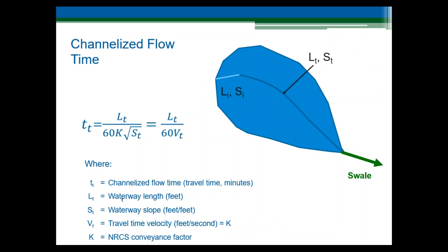The next component of the time of concentration is the channelized flow time. Flow does not have to be in an engineered channel — channelized flow time also includes conveyance of concentrated flow in rills, gullies, gutters, or other site features where the depth of runoff increases beyond the sheet flow depth. Channelized flow time is equal to the distance traveled divided by the average velocity. The average velocity is calculated based on an NRCS conveyance coefficient from Table 6-2 of the UDFCD manual, multiplied times the square root of the waterway slope. The 60 in the formula converts from seconds to minutes.